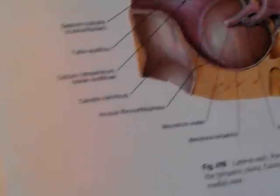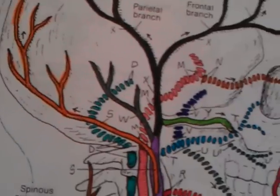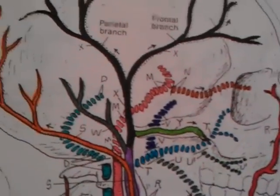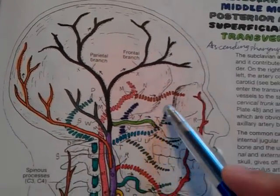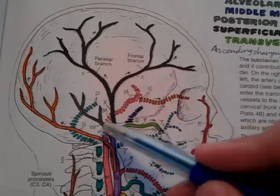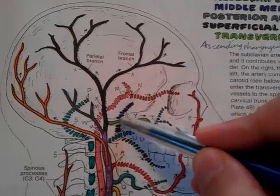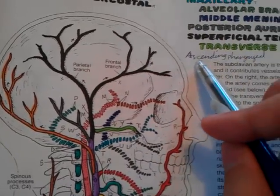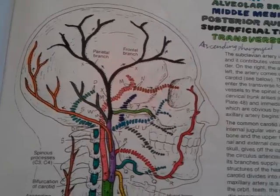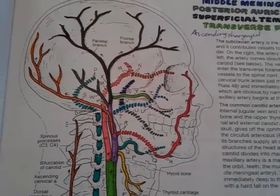The blood supply of the tympanic cavity is by the maxillary artery, by the posterior auricular artery, middle meningeal artery, and ascending pharyngeal artery. The nerve supply is by the tympanic plexus.